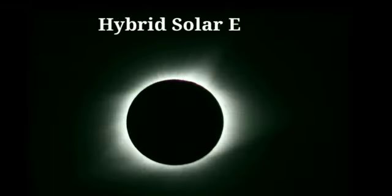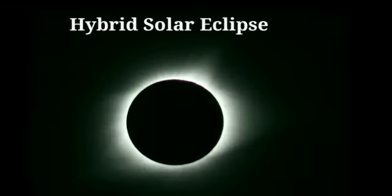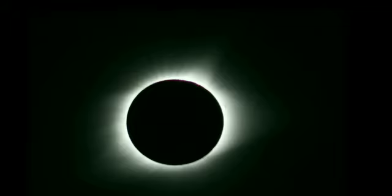Hybrid solar eclipses, also known as annular-total eclipses, are the rarest type. They occur when the same eclipse changes from an annular to a total solar eclipse or vice versa. Till now we learned about solar eclipse, but now we're going to learn about lunar eclipse.